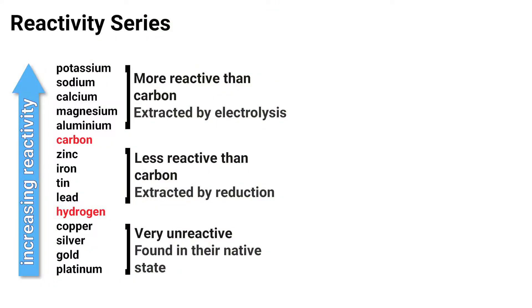The metals in the middle part of the reactivity series — those that are less reactive than carbon but more reactive than hydrogen — can be found in ore form with oxygen. The way we remove the oxygen from these compounds is by reacting them with carbon. This is technically a type of displacement reaction. Carbon is more reactive than these metals and so will preferentially bond with oxygen and displace the metal out of the compound.